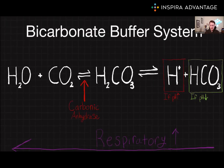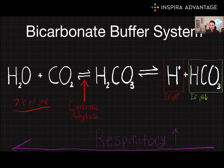The bicarbonate buffer system is a key component of the human body's pH regulation. It works by maintaining the balance of carbonic acid and bicarbonate ions in the blood. Carbonic acid is formed when carbon dioxide dissolves in water, and it can be converted into bicarbonate ions through the action of the enzyme carbonic anhydrase. The bicarbonate buffer system helps maintain a steady pH of 7.4 in the blood. If the pH begins to rise, the bicarbonate ions will neutralize the excess acid, preventing the pH from becoming too high. If the pH begins to fall, the carbonic acid will dissociate, releasing hydrogen ions and keeping the pH from becoming too low.